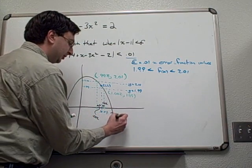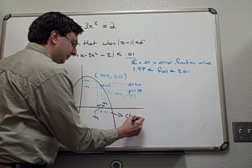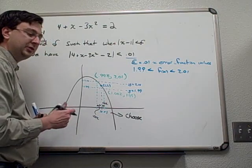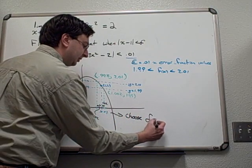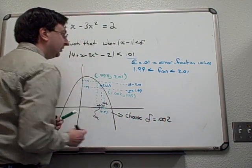So that makes our choice for delta relatively easy since we extend in both directions 0.002 units. So we're going to choose delta to be 0.002 to answer this question.